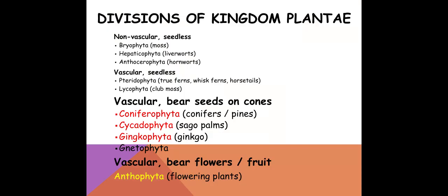Last time we talked about our non-vascular plants that have no seeds and our vascular plants that also don't have seeds. Today, we want to focus on our vascular plants that have seeds on cones, including coniferophyta, which are conifers or pine trees, cycadophyta, which are sago palms, ginkgophyta, which are ginkgo trees, and gnetophyta. We also have our vascular plants that do have flowers and fruits to bear seeds — all of them are in anthophyta.